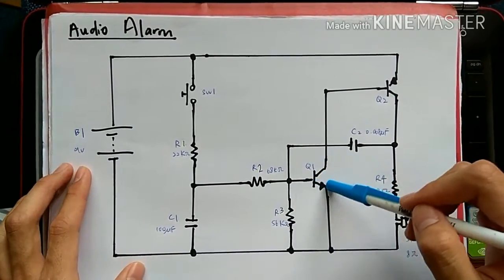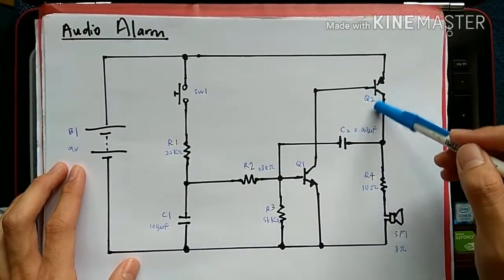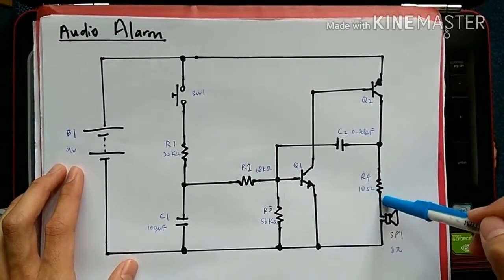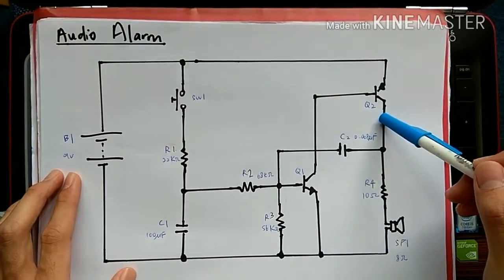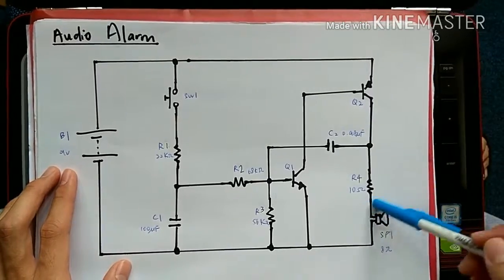At that time, Q1 will work again and make Q2 work and produce sound at SP1. Q1 and Q2 work quickly until it causes the frequency at the loudspeaker.